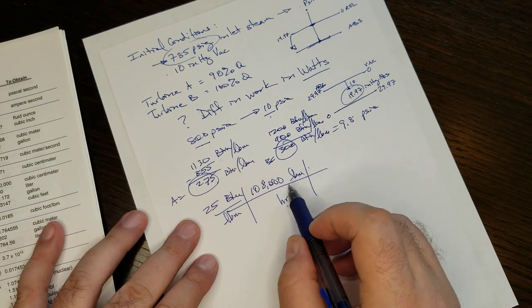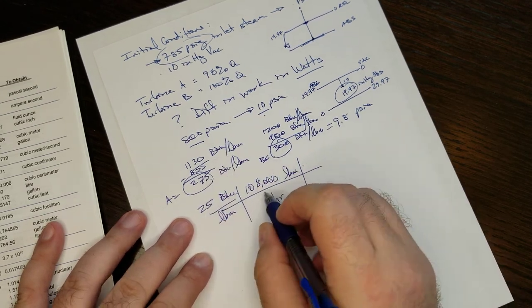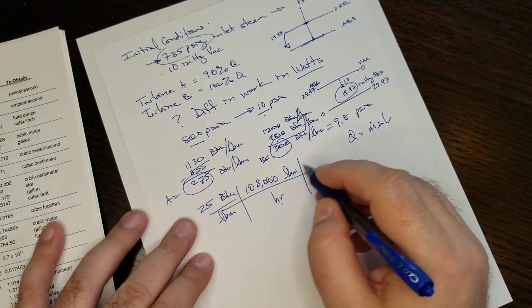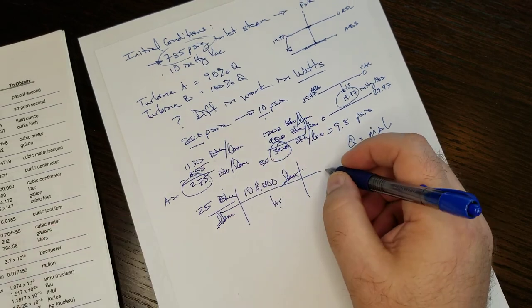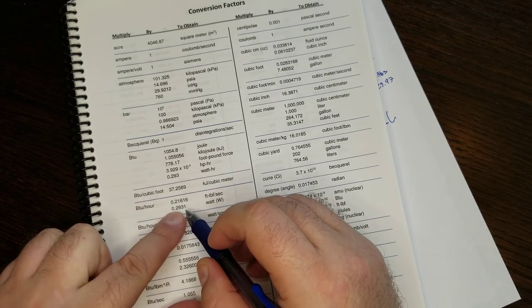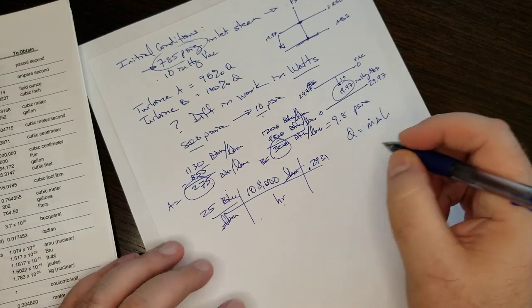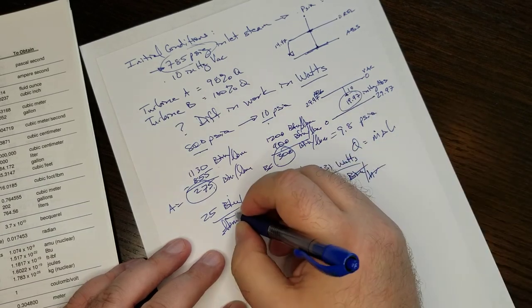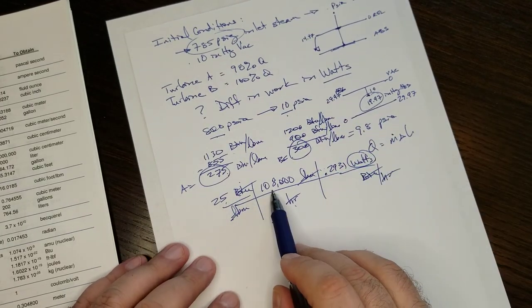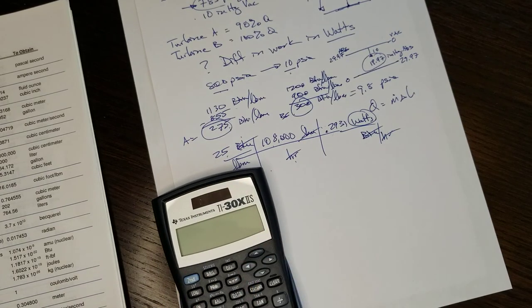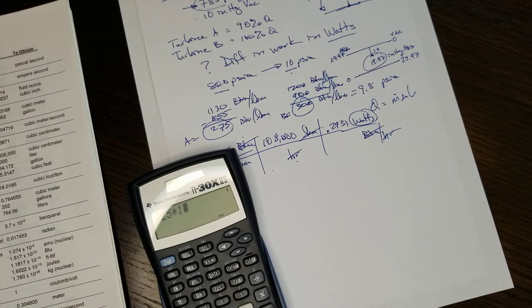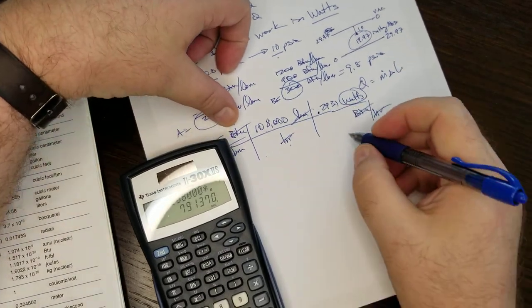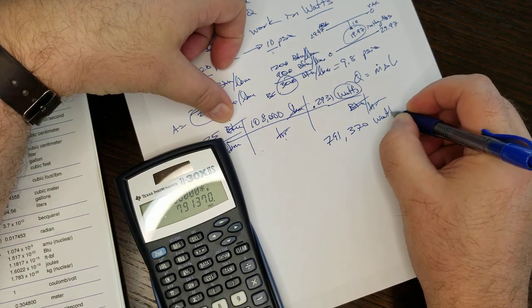Let's, for this one, let's keep working on this. 25 BTUs per pound mass, which is the difference between the two turbines times the mass flow rate. Q equals mass flow rate times a change in enthalpies, right? And this is the difference in enthalpy between the two. And we have BTUs per hour. And BTUs per hour times 0.2931 watts per BTUs per hour, which cancels BTUs and hours out, left with watts. So 25 times 108,000 times 0.2931. That equals 791,370 watts.